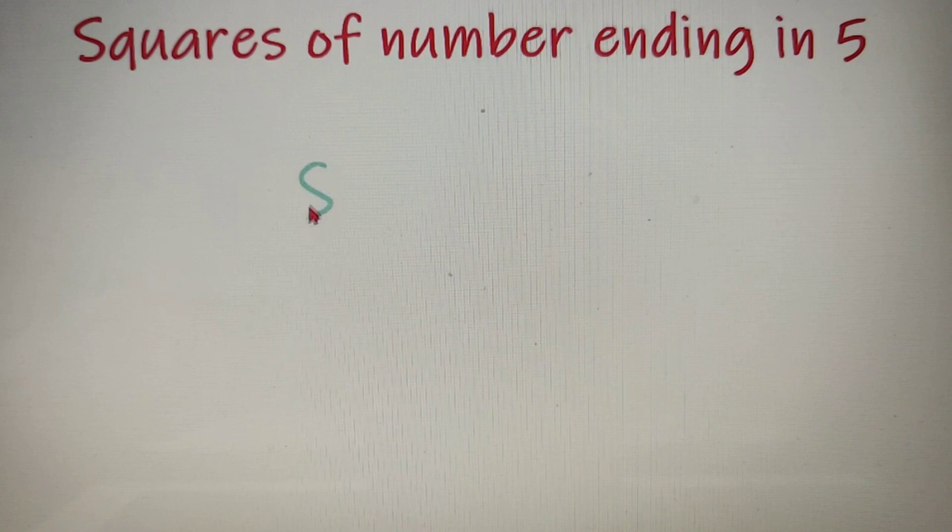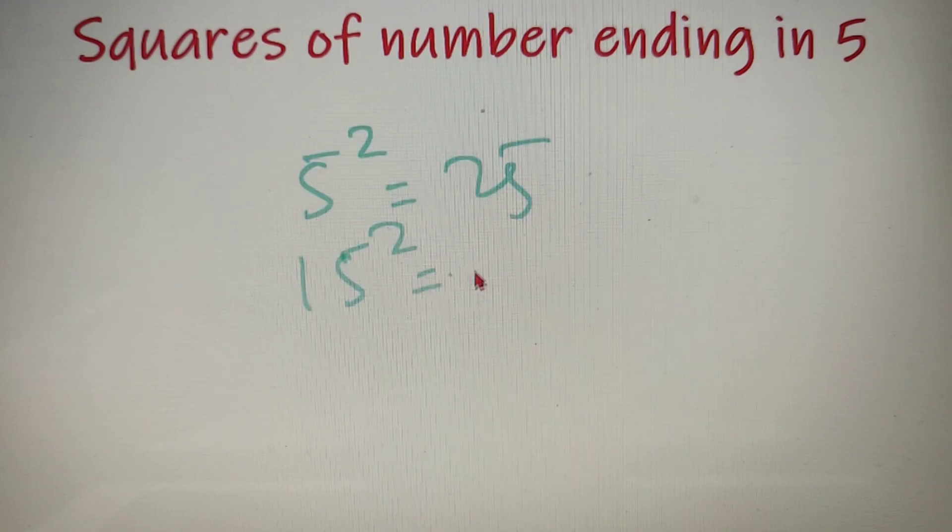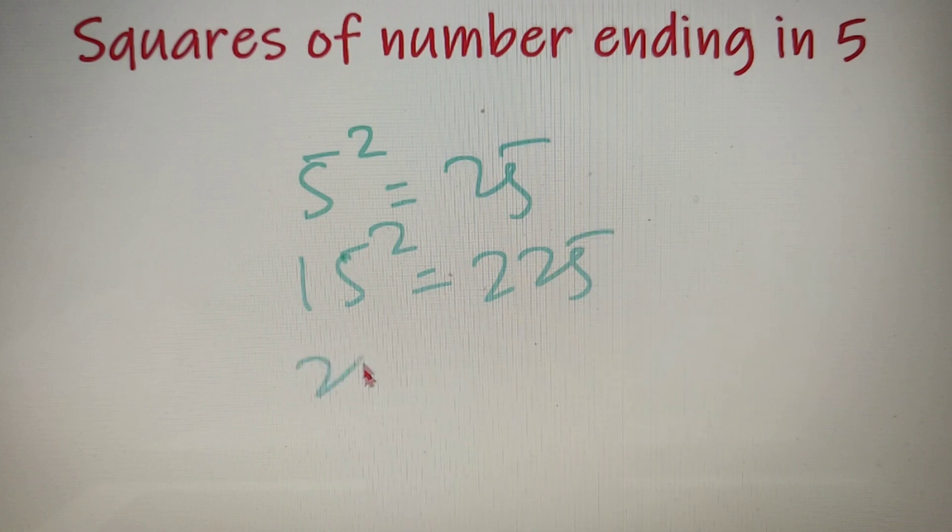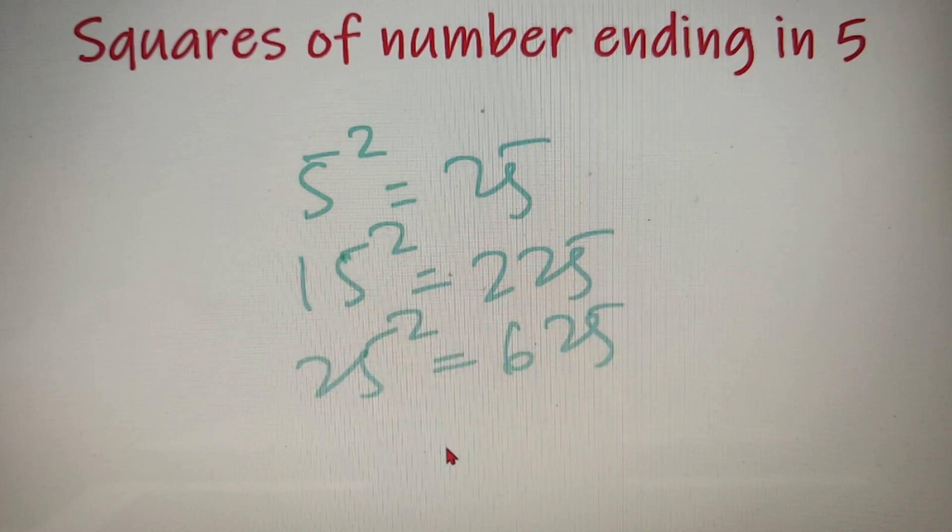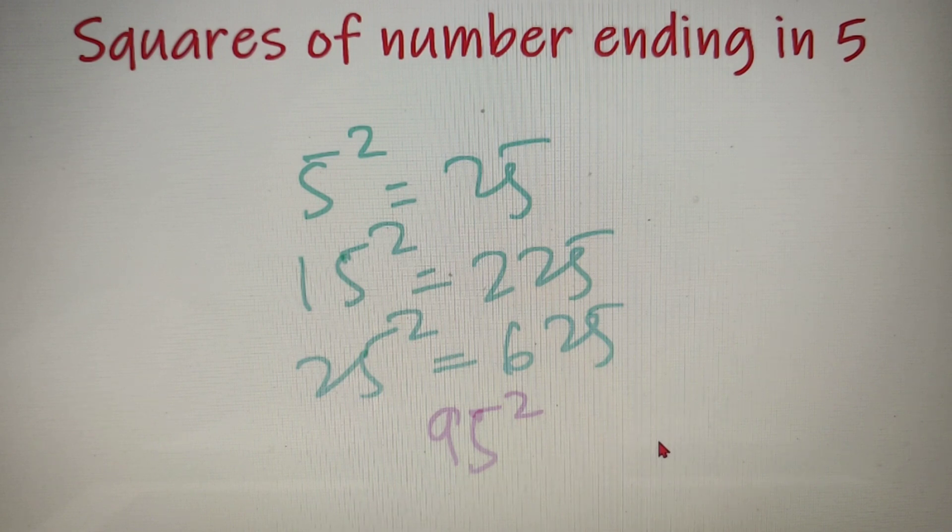Now we all know that 5 square is equal to 25, 15 square is equal to 225, 25 square is equal to 625, but what if I tell you to find out the square of the number 95. It is not as easy as all these three numbers because 95 square is a big number and it is not easy to remember.